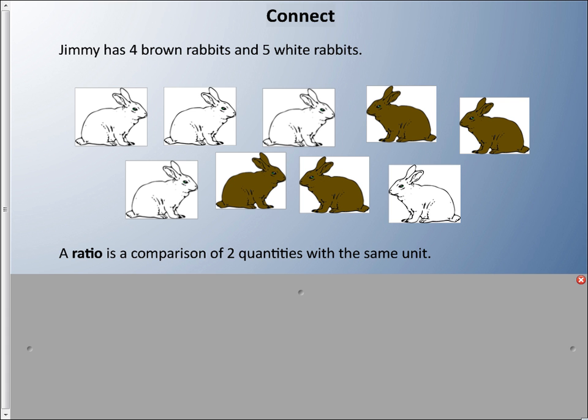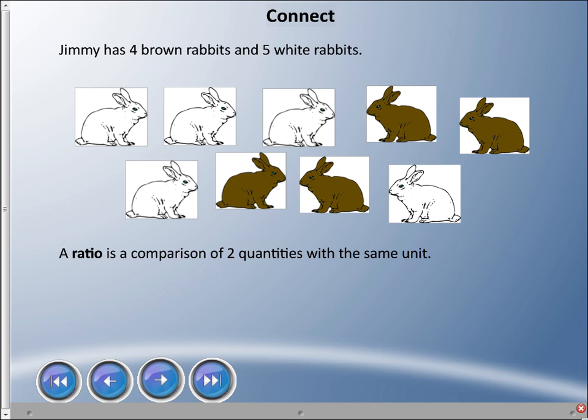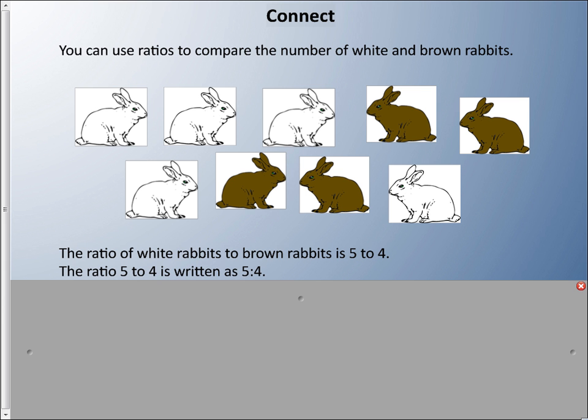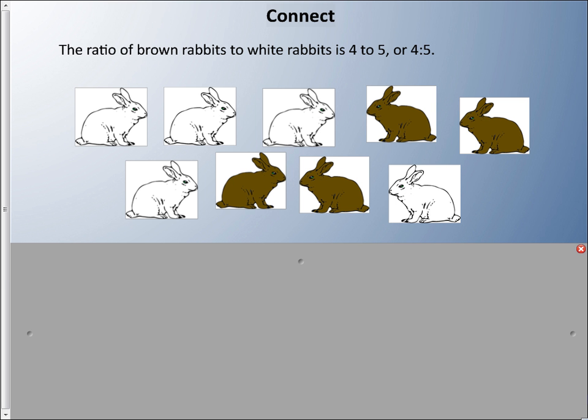For example, the ratio of white rabbits to brown rabbits is five to four. We write a ratio with a colon: 5:4. The ratio of brown rabbits to white rabbits is 4:5. We call these part-to-part ratios.